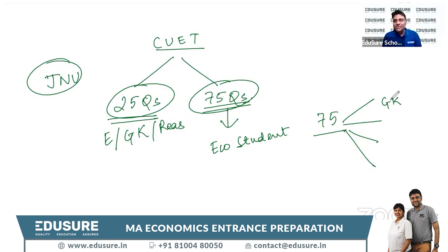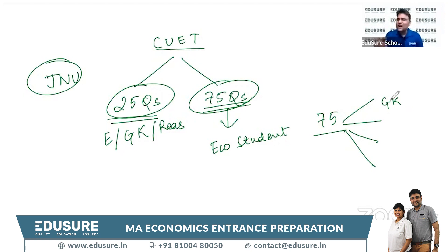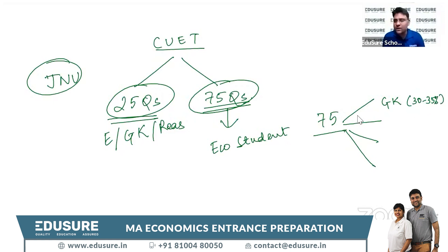The GK questions will be economy-oriented — for example: which sector is India's population most engaged in, what was the population of India in 2021, or what is the GDP growth rate for FY 2020. So approximately 18 to 20 questions, making up 30 to 35 percent of the paper, will be GK. For Microeconomics, approximately 10 to 12 questions are expected.